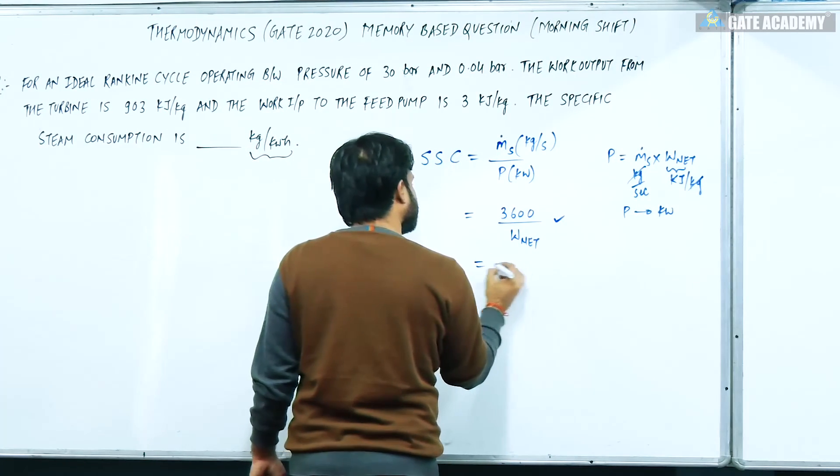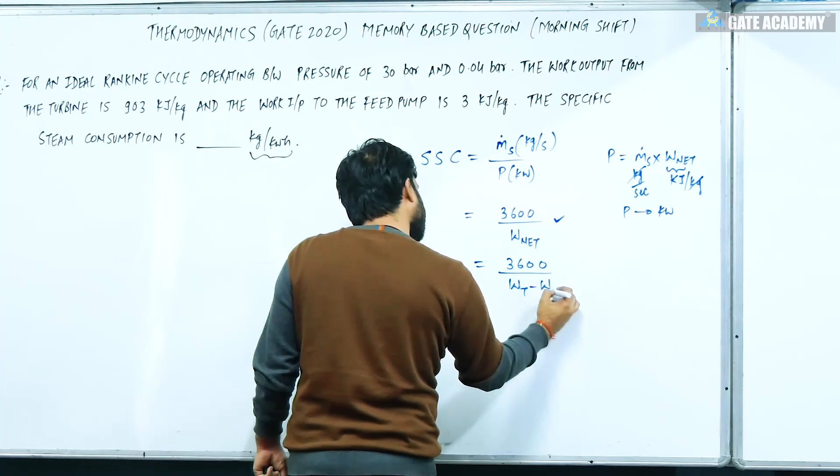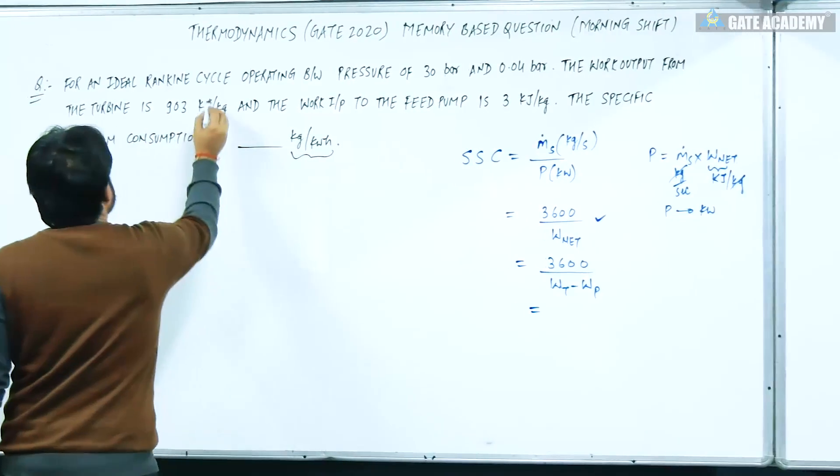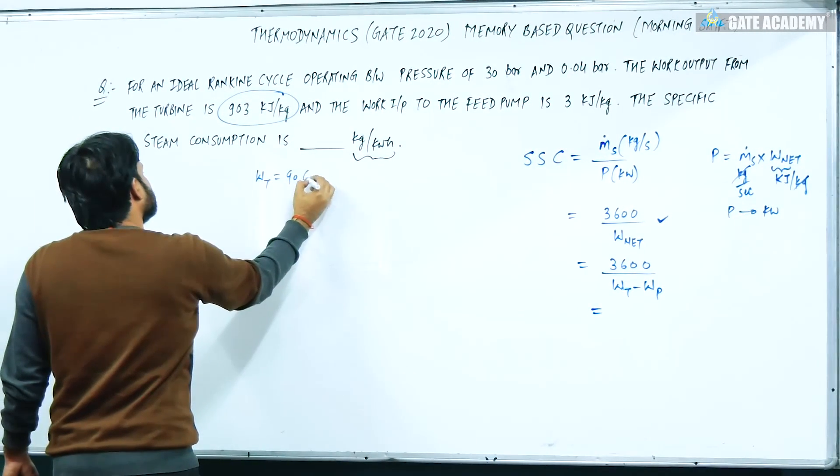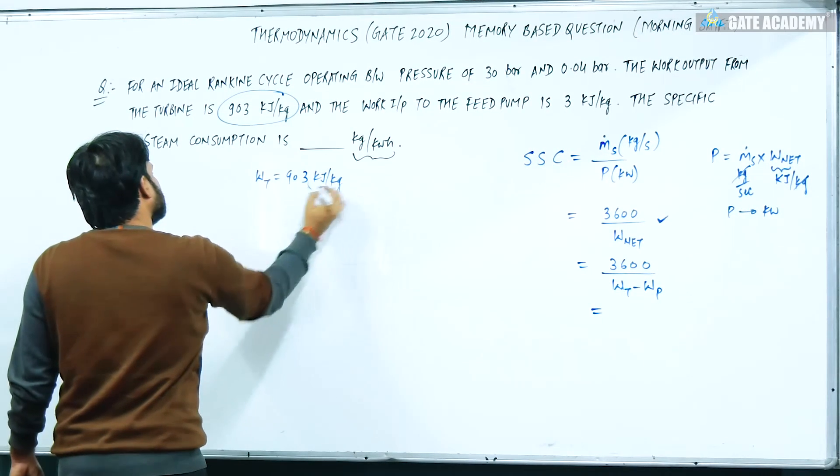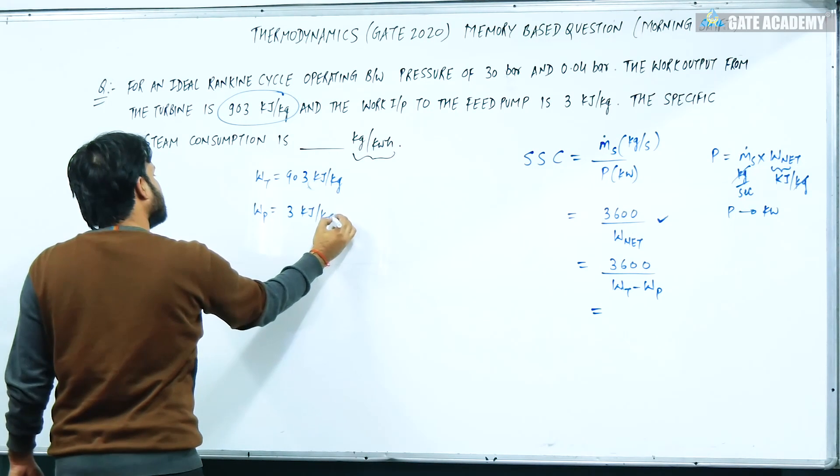We can calculate directly how? W_net is W_turbine minus W_pump. You have to calculate the turbine and pump. See, given data which you have - turbine work 903 kilojoule per kg and pump work is 3 kilojoule per kg. So both data are given.